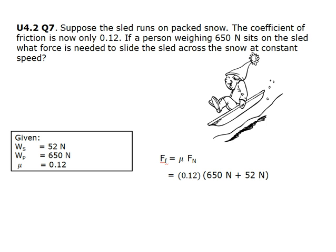We input our mu and our Fn, our mu being 0.12, and our Fn being the addition of the weight of the sled and the weight of the person.